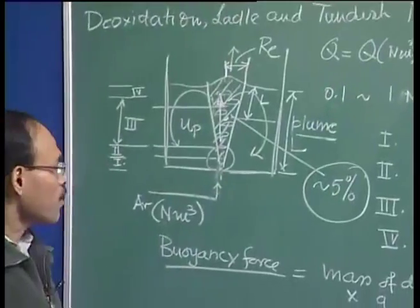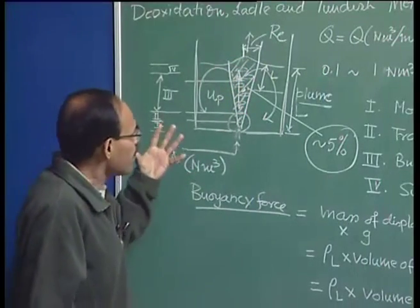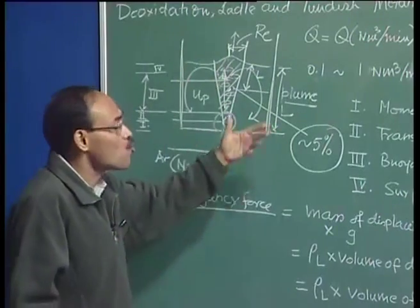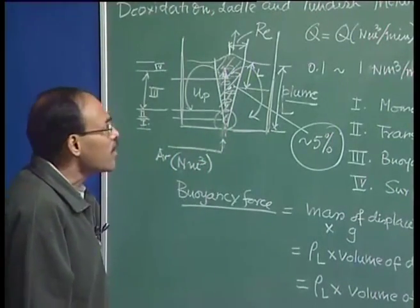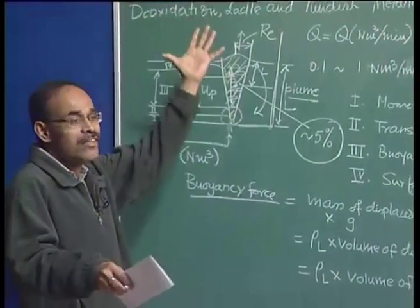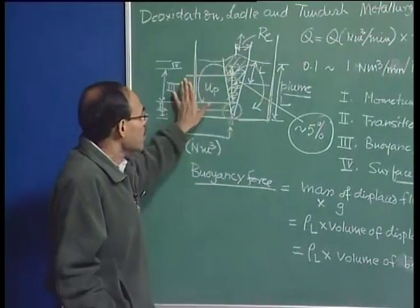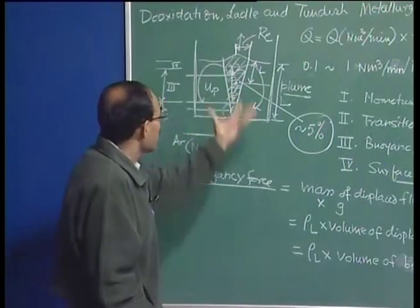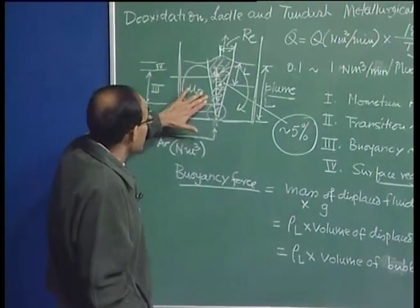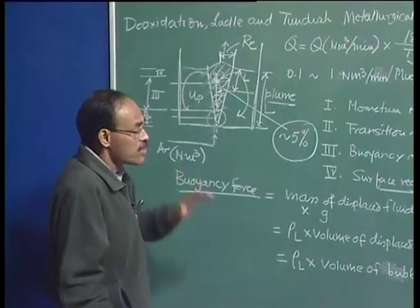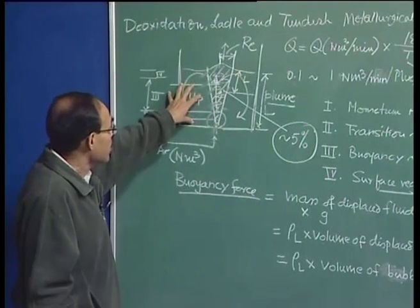This is a very important deduction: the gas volume fraction within the two-phase region is actually a very small quantity — only 5 percent of this region is occupied by argon bubbles. Given this picture, we can conceptualize the gas injection as an unconfined buoyant plume rising through the liquid, since the gas volume fraction is very small and the bubbles are located far from the walls. Energy is continuously transferred from the bubbles to the fluid as they rise.